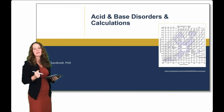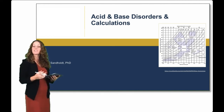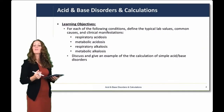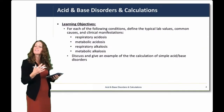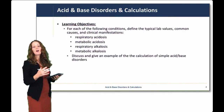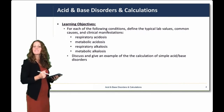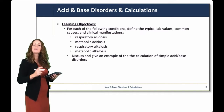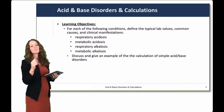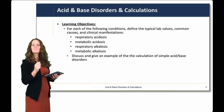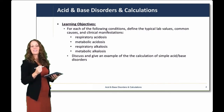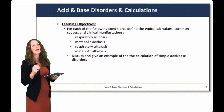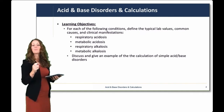This lecture is Acid-Base Disorders and Calculations. For each of the following conditions, we will define the typical lab values, common causes, and clinical manifestations: respiratory acidosis, metabolic acidosis, respiratory alkalosis, and metabolic alkalosis. We will discuss and give an example of the calculation of simple acid-base disorders to help you begin.